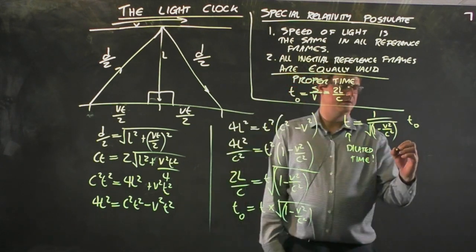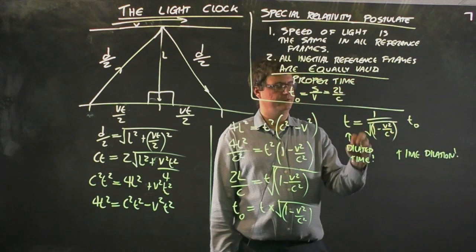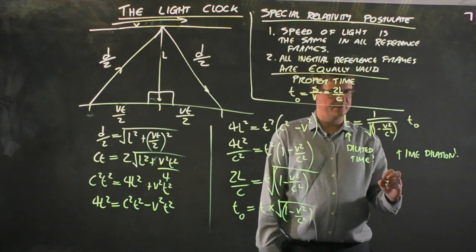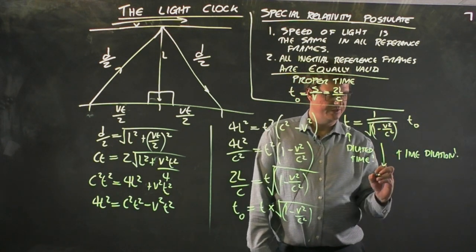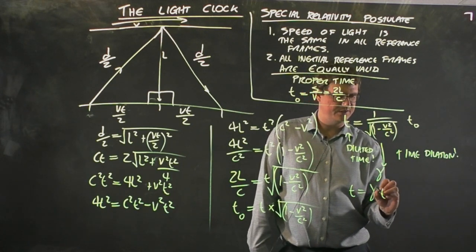Or we can swap it around. We can say T is equal to 1 on the square root of 1 take V squared on C squared times T0. The denominator here is a small decimal number. 1 divided by a small decimal number is a number bigger than 1, so this time is dilated, it's bigger. This is the time dilation formula. This 1 on the square root of 1 take V squared on C squared gets called gamma, the Lorentz factor.